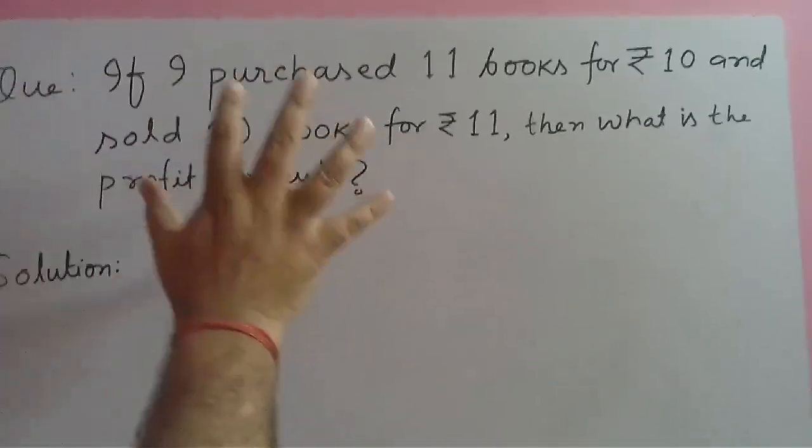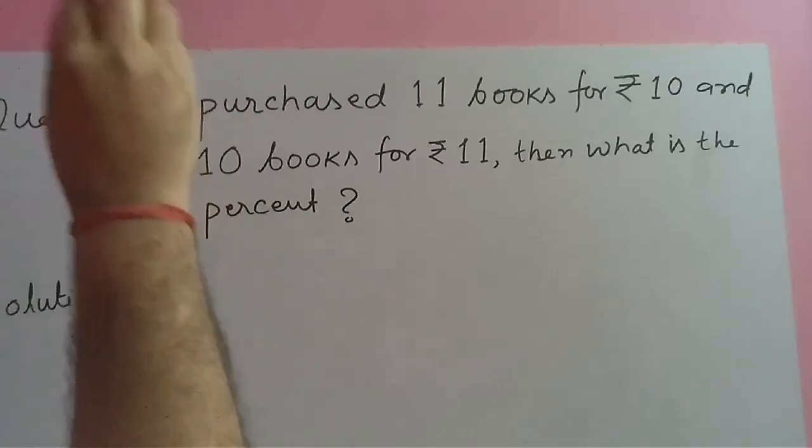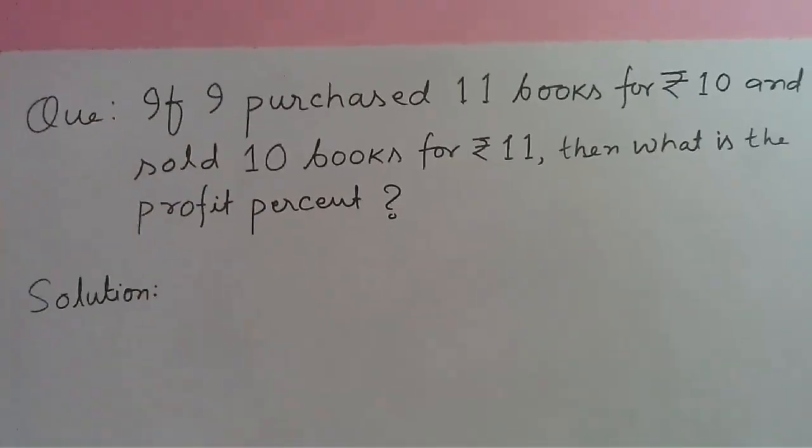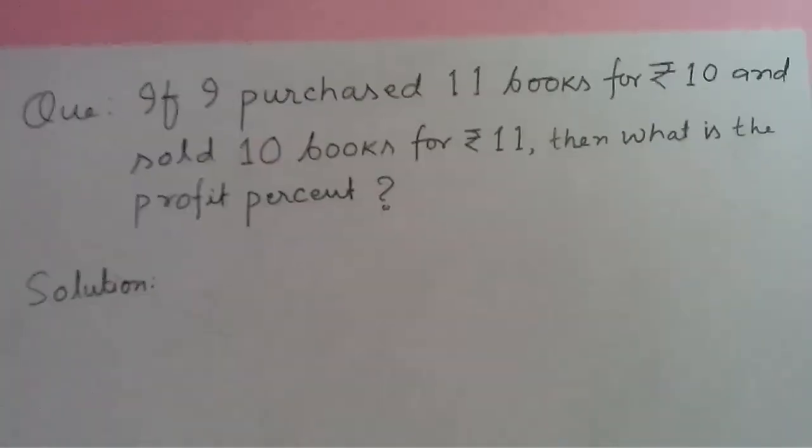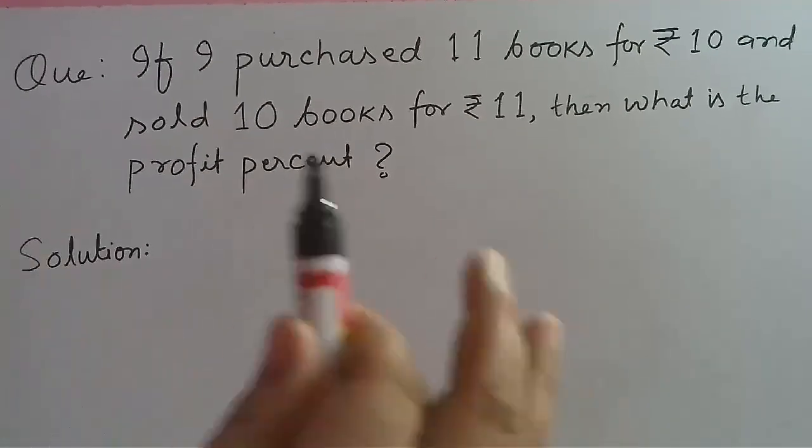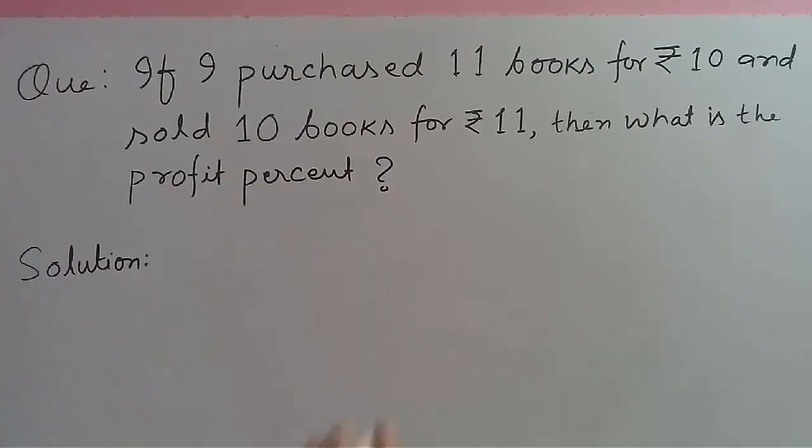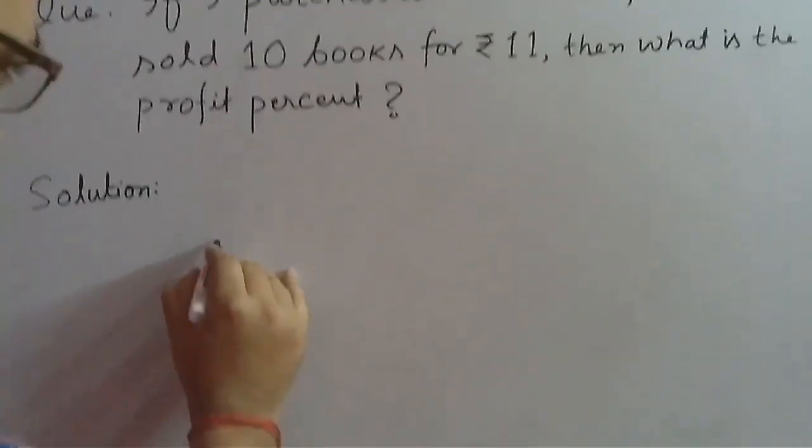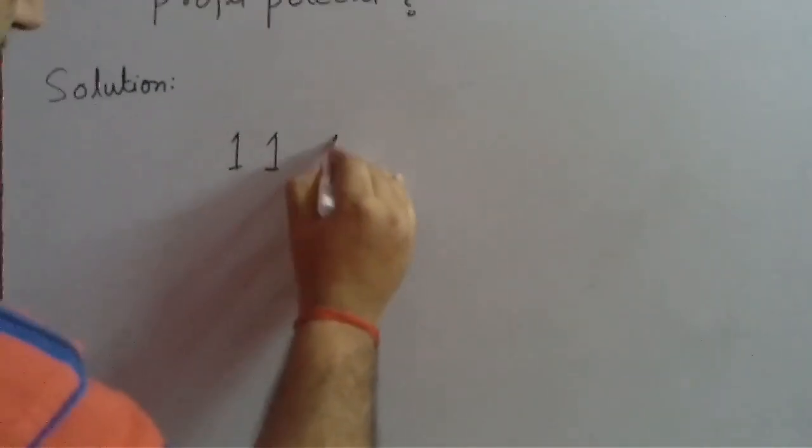The number of books sold or purchased should be the same, whatever it may be. The most easiest way is: for 11 books cost price is rupees 10.